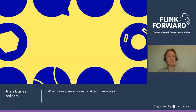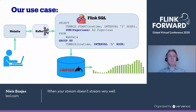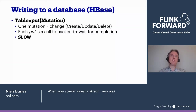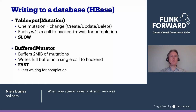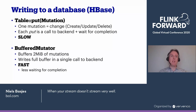The next step in our example application is writing to a database — here I've used HBase. In HBase, you can have a mutation (a create, update, or delete event) in a single put call. If you have a lot of changes, that becomes slow. So HBase has something called a buffered mutator, which buffers a couple of megabytes of mutations. When that is full, it flushes in one go to the backend. This is faster because it takes far fewer interactions with the backend and thus less waiting for completion.